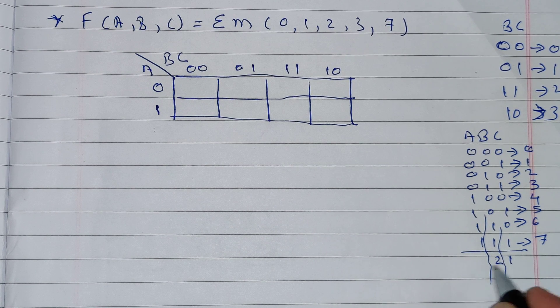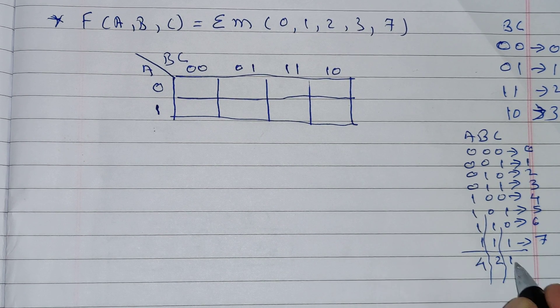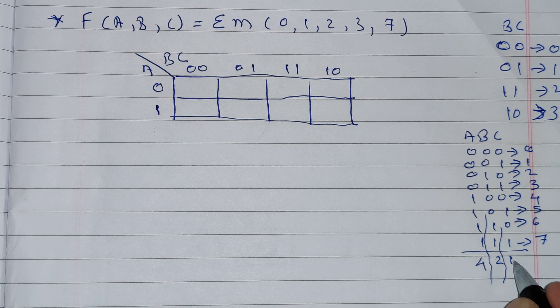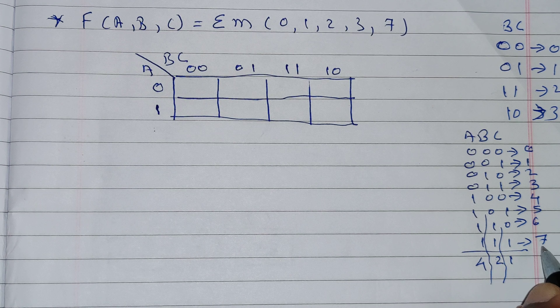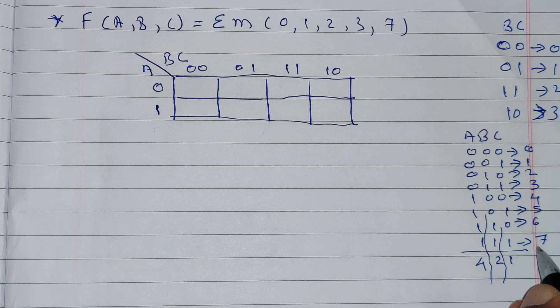To remember the cell numbering, use the 1-2-4 rule. For example, 4 plus 2 is 6, and 6 plus 1 is 7, so the code for 111 is 7.